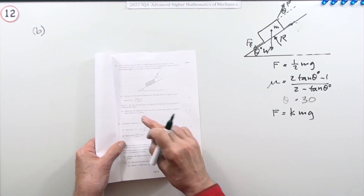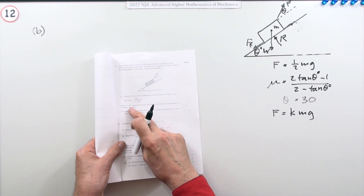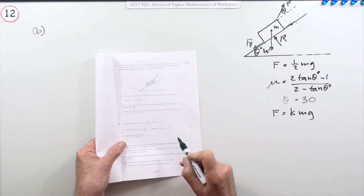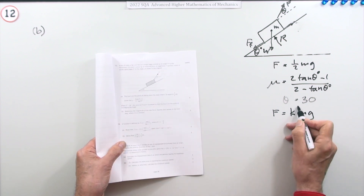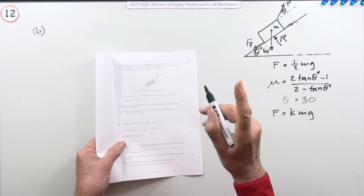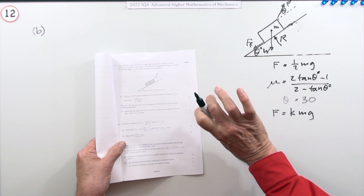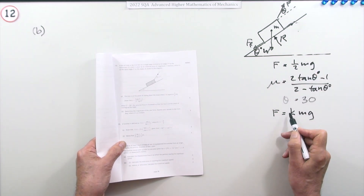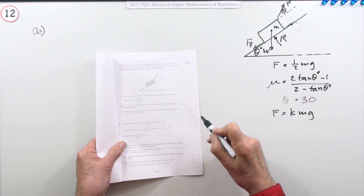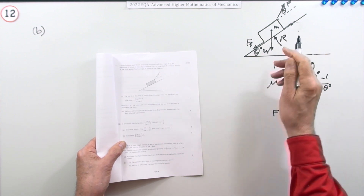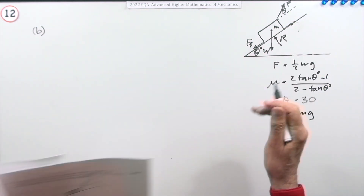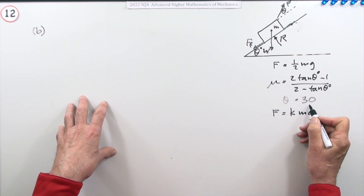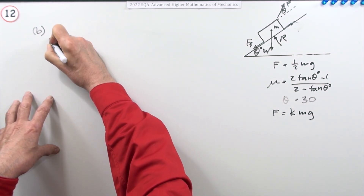Part B: θ = 30°. The external force is increased to kmg — some other multiple of the weight — and crucially, the box is now on the point of moving up the slope. All forces are the same except F is now kmg, and importantly friction has reversed direction: since the box is about to move up, friction now acts down the slope.